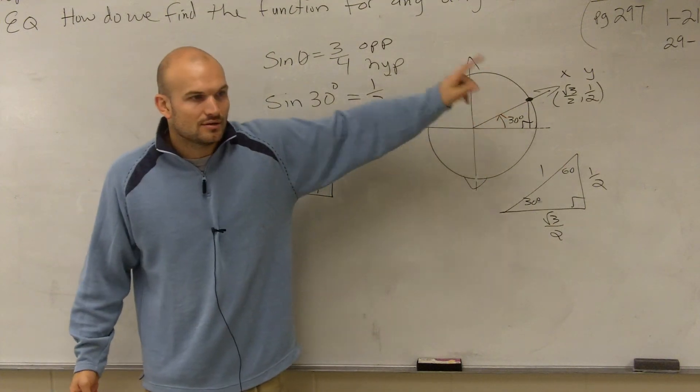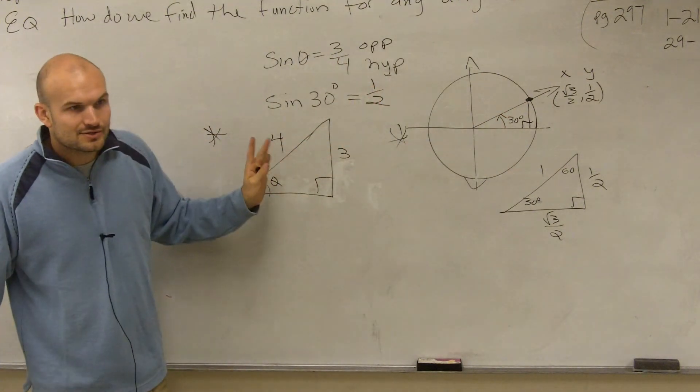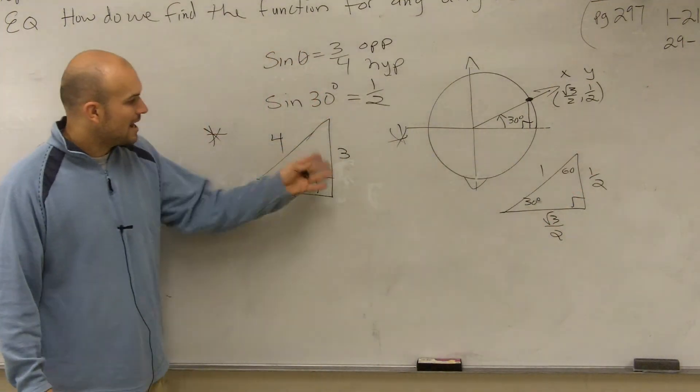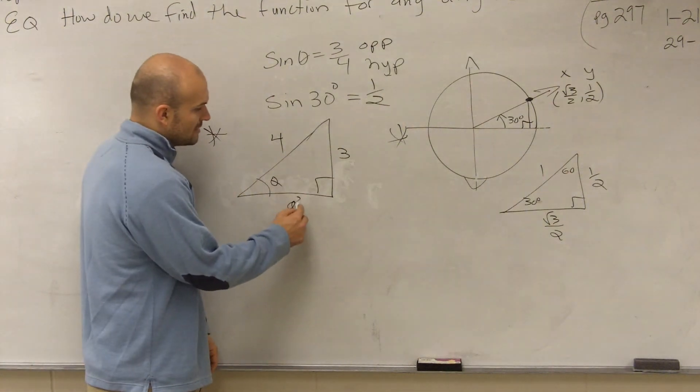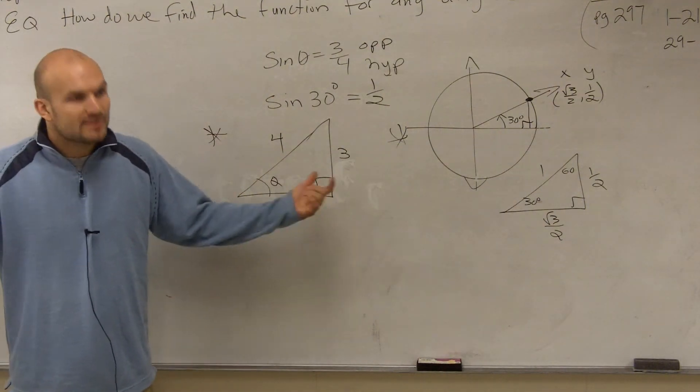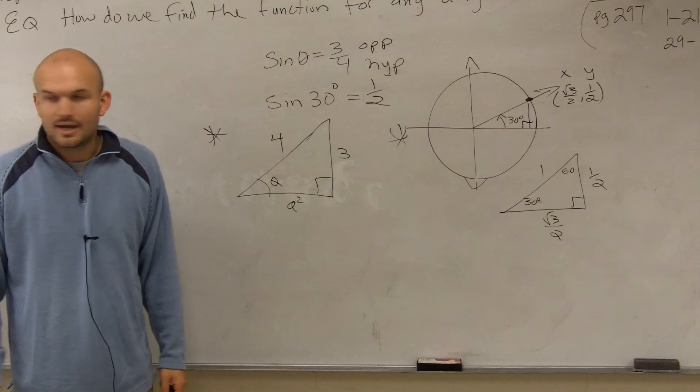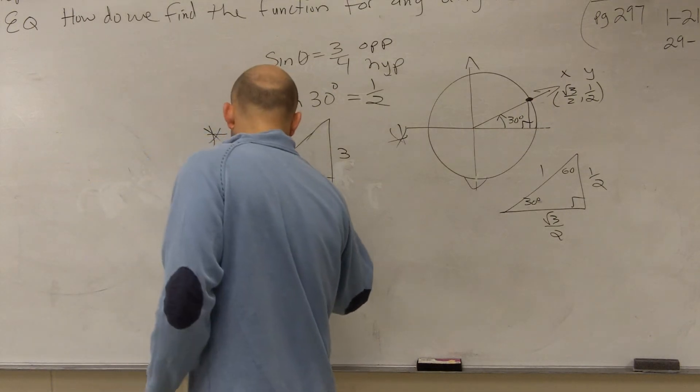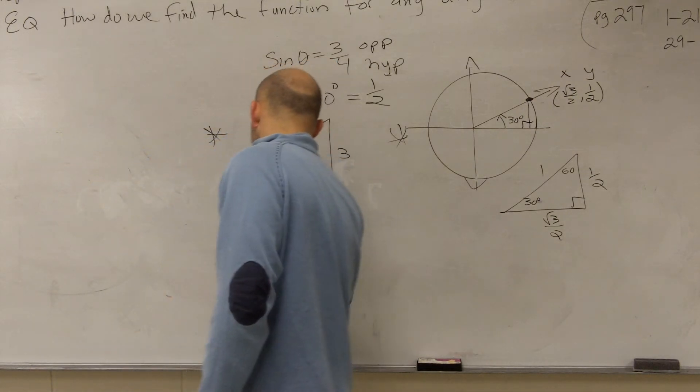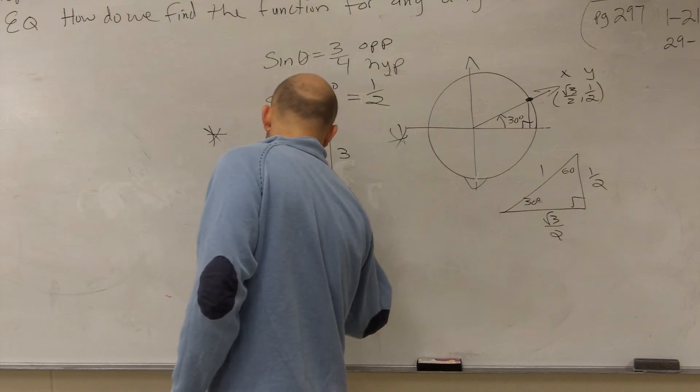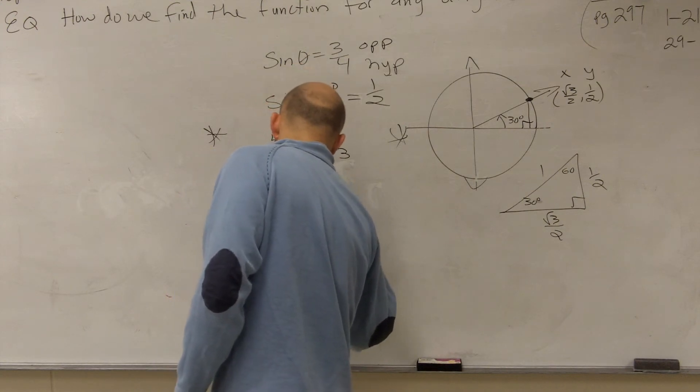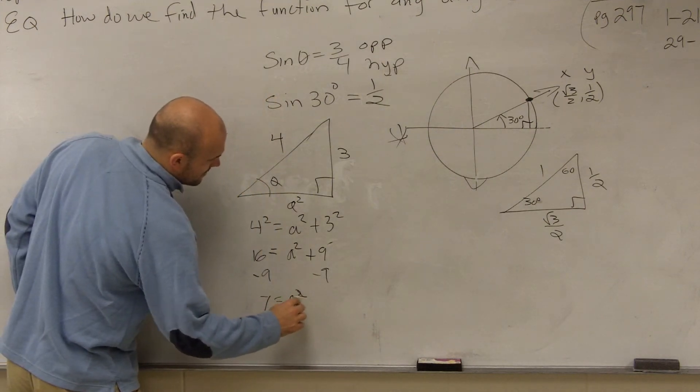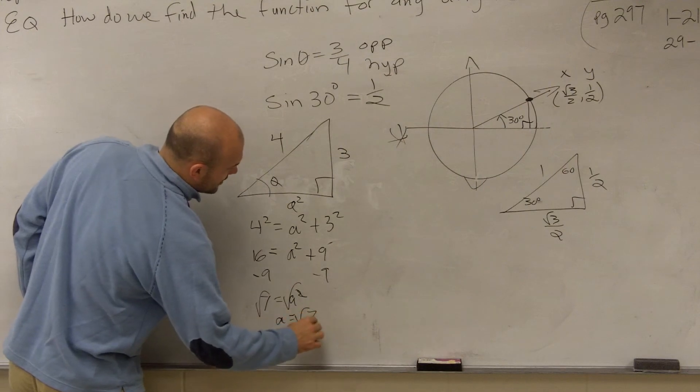So you can say, so you know that these are not going to be the same. So how do you figure out what this length is? What do you do? Pythagorean theorem. So now, once you do Pythagorean theorem, you have 4 squared equals a squared plus 3 squared. 16 equals a squared plus 9. Subtract 9. 7 equals a squared. Square root. a equals the square root of 7.